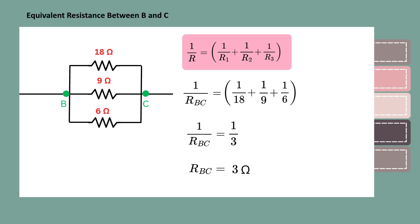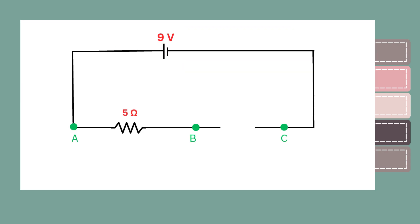So, the equivalent resistance between B and C is 3 ohms. Instead of using the three resistors between B and C, we can now use just one 3 ohm resistor.